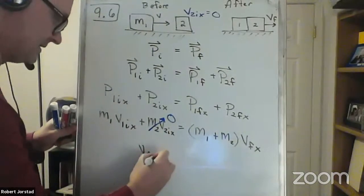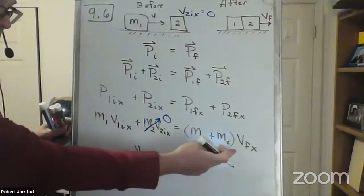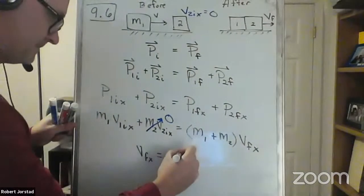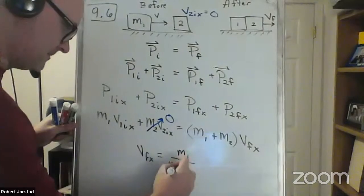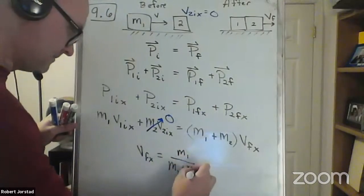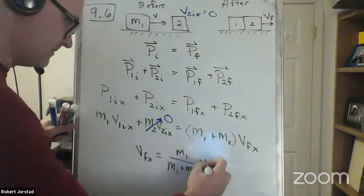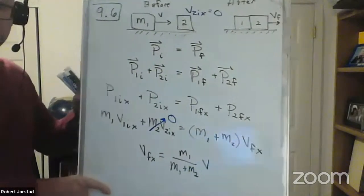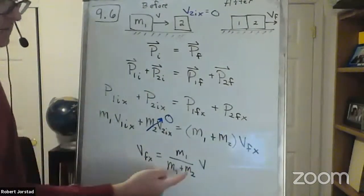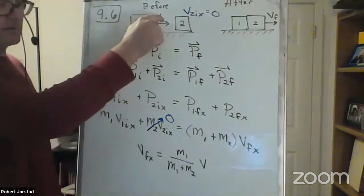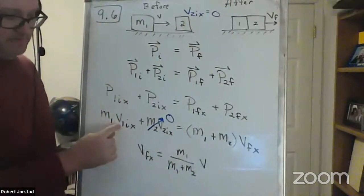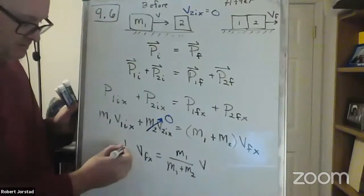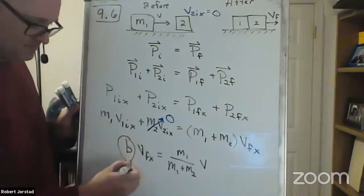I think we get V final x equals this thing divided by that. Notice in this particular problem, we were told the initial velocity of one was V, so this becomes V. And all I did was a little algebra. This is the answer to part A. Any questions on that?